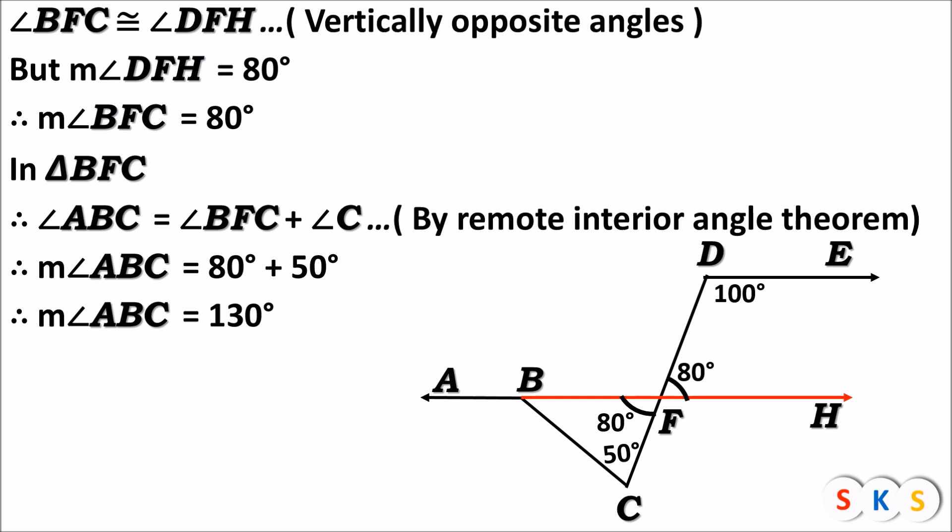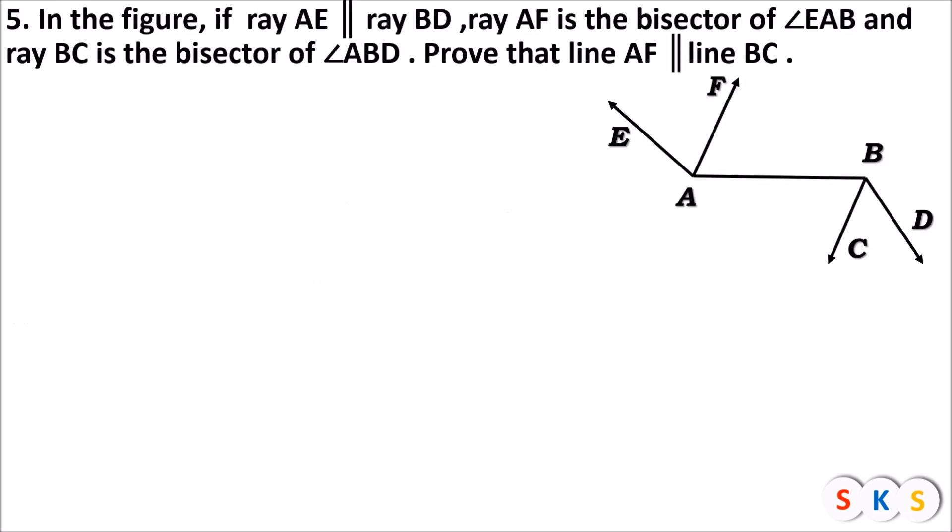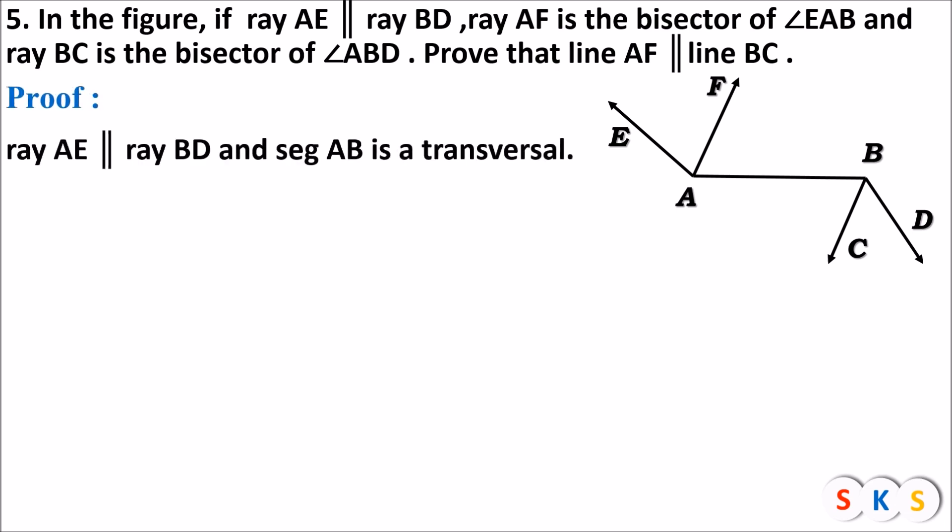Here we have the next question. In the figure, if ray AE is parallel to ray BD, ray AF is the bisector of angle EAB, and ray BC is the bisector of angle ABD, prove that line AF is parallel to line BC. Let's see the proof. Ray AE is parallel to ray BD and segment AB is a transversal. Therefore angle EAB is congruent to angle ABD because they are alternate angles.